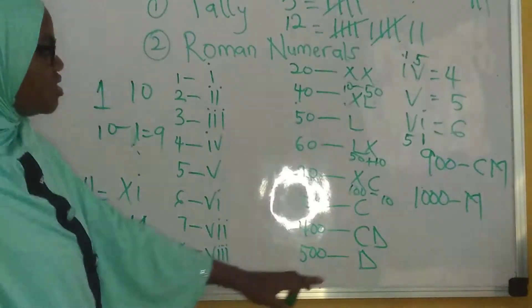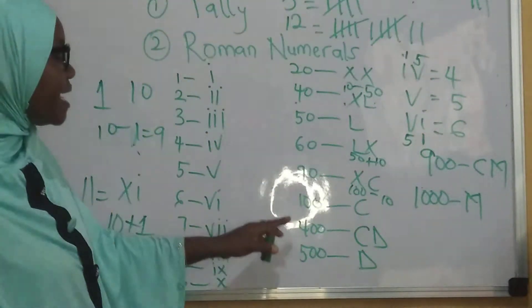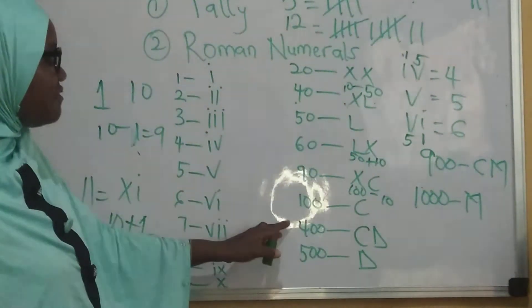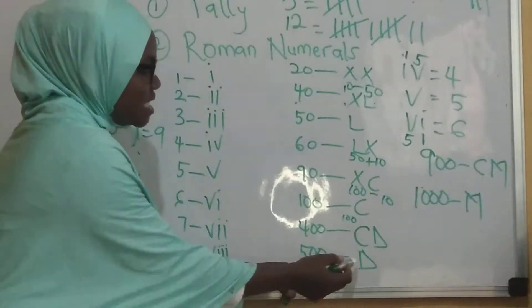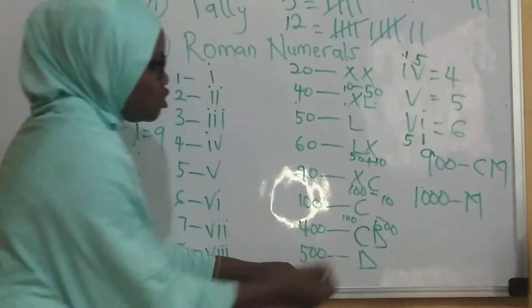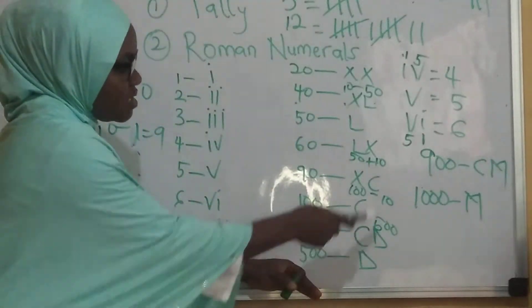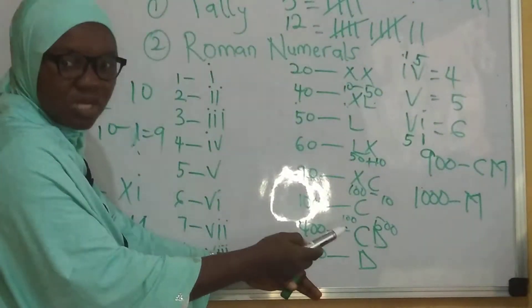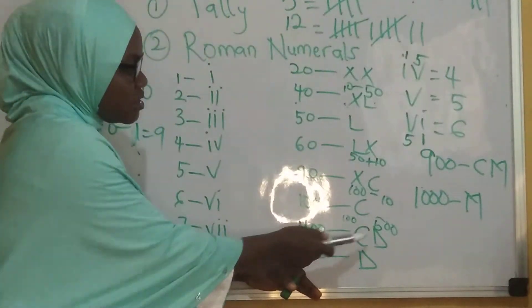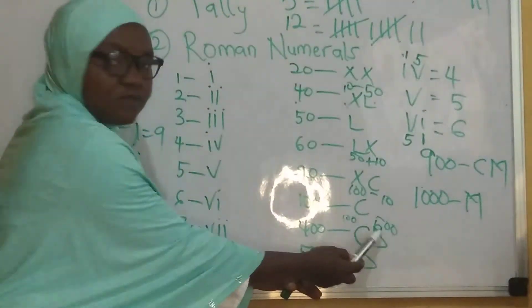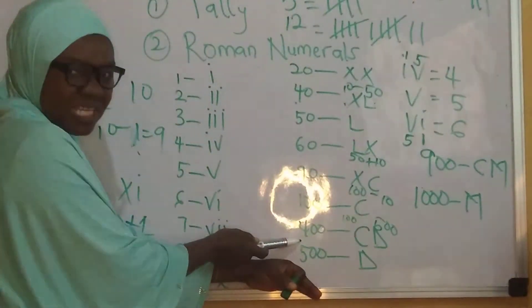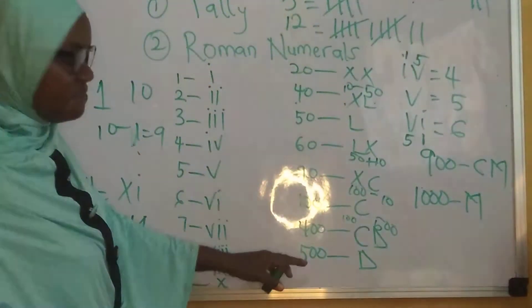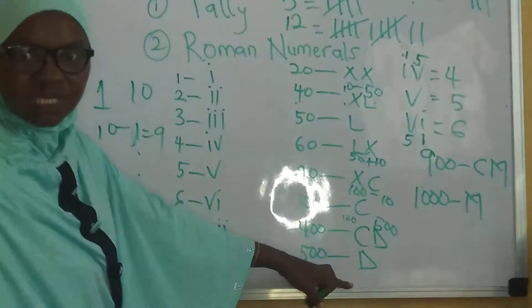My 400 is CD. My 500 is D. My 400 is CD because I know that my C is 100. My D is 500. And I told you, anytime you have the smaller number first and the bigger number later, that means you have to subtract. So since I have 100 here first, then 500, that means I will say 500 minus 100 to give me 400. My 500 is D.